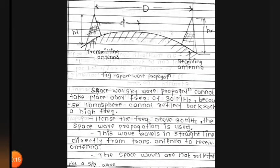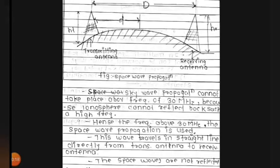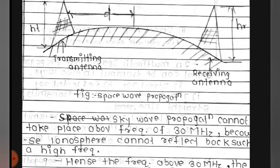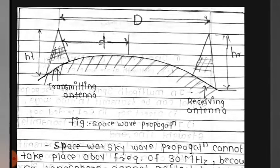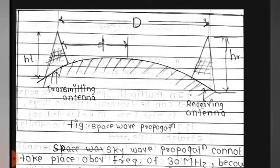This is the diagram for space wave propagation. In that we see one transmitting antenna and one receiving antenna. The distance is small d, the transmitting antenna has a height h_t, and the receiving antenna has a height h_r. These two distances are denoted by capital D.